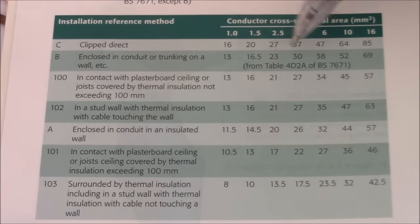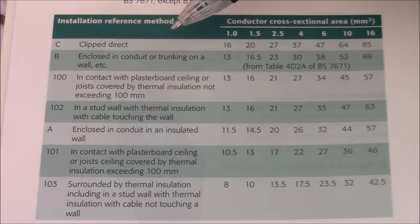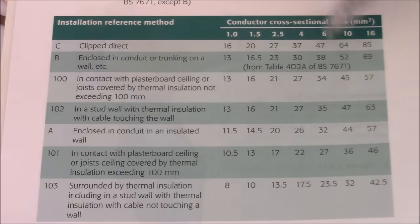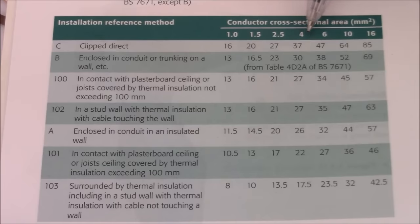So this table gives us the rating of the cables. It depends obviously on the method of installation. So on this side, where the numbers are, you've got the conductor cross sectional area. Basically the sizes of the conductors, the cables. 1.0, 1.5, 2.5, 4, 6, 10 and 16. So there's the sizes of the cables.